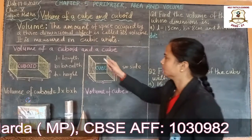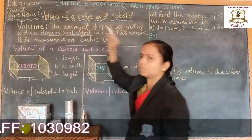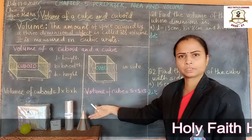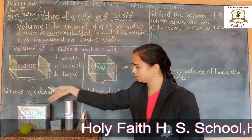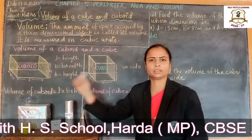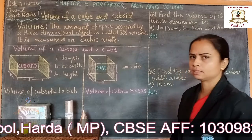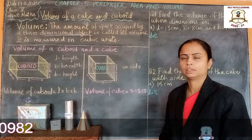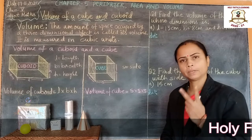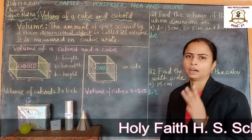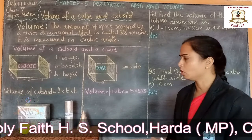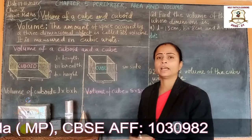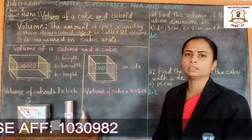Let's see what a three-dimensional object is. Look at these objects or shapes: this is cuboid, cube, cylinder, cone, and sphere. All these shapes have three dimensions — length, breadth, and height. Therefore, we call these shapes or objects three-dimensional shapes or objects.